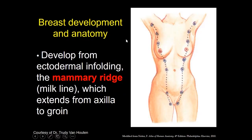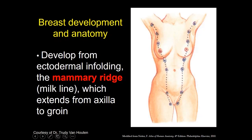Let's start with some basic embryology. When you're in utero, the breast will develop from an ectodermal infolding called the mammary ridge, or more informally the milk line, which extends from the axilla all the way down to the groin. As the fetus is developing in utero, this mammary ridge will regress so that eventually all that you're left with is the mammary tissue, which should be in the location where we normally have the breasts anatomically positioned.